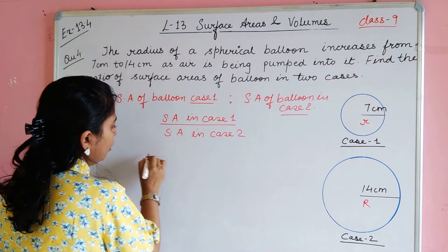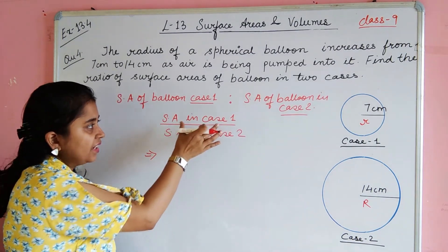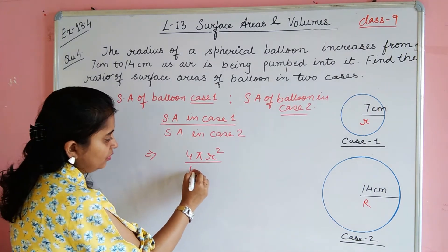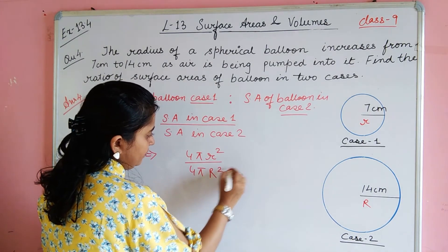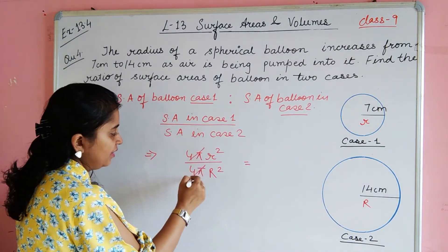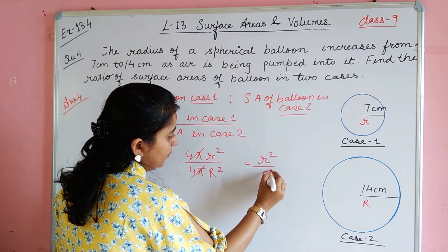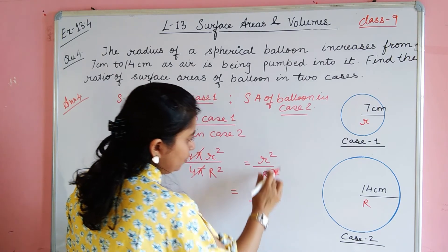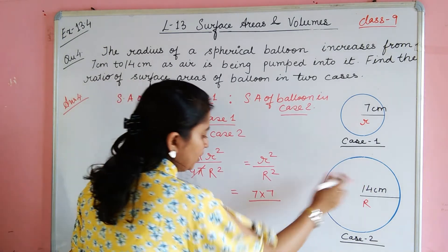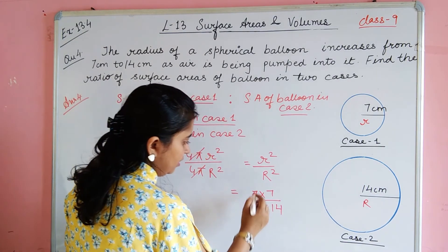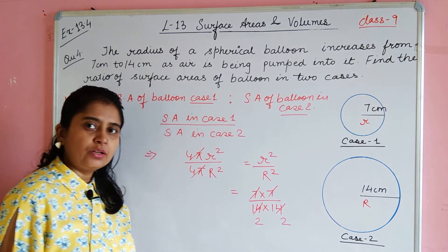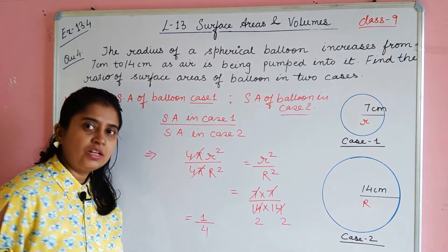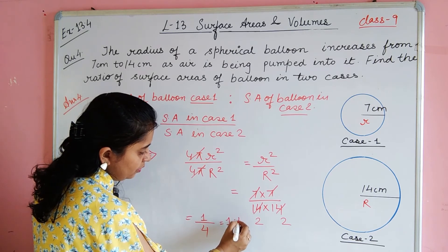Ratio is nothing but division. हम इसको ऐसे भी लिख सकते हैं — surface area in case 1 divide by surface area in case 2. Case 1 में surface area होगा 4πr² और case 2 में होगा 4πR². ऊपर भी 4π है और नीचे भी 4π है, यह कट जाएंगे। आपको मिल जाएगा r² upon R². Small r की value है 7, so 7×7, और capital R की value है 14, so 14×14. Numerator में मिल जाएगा 1 and denominator is 4, so it comes out to be 1 upon 4, यानी 1:4.